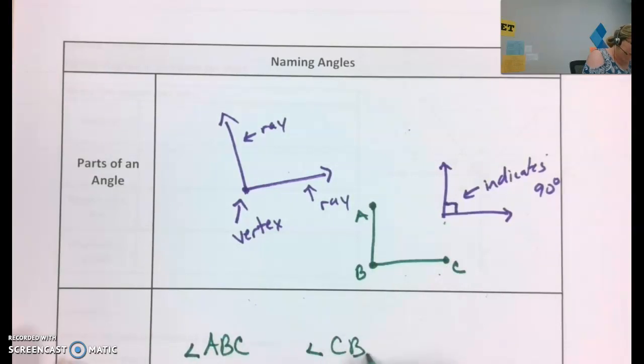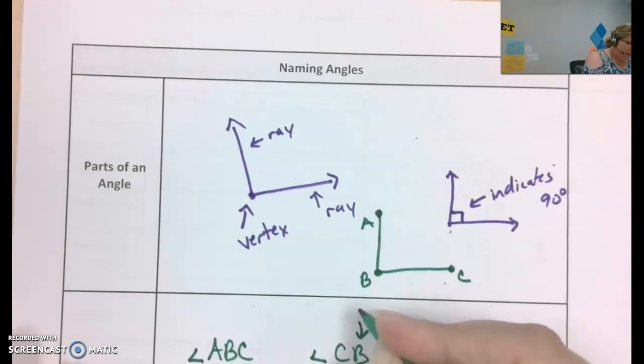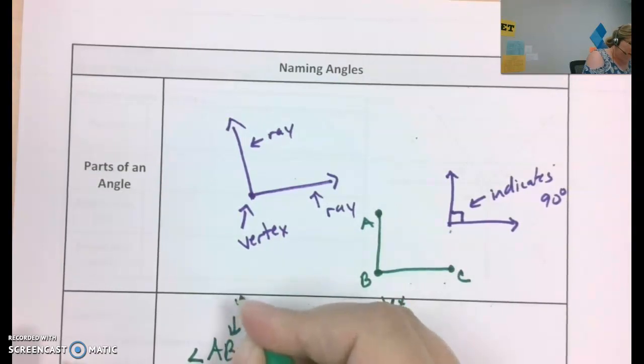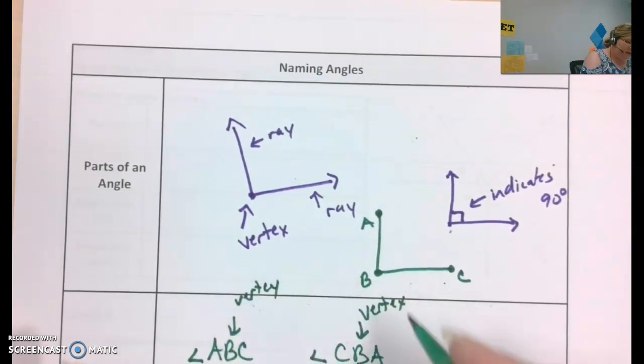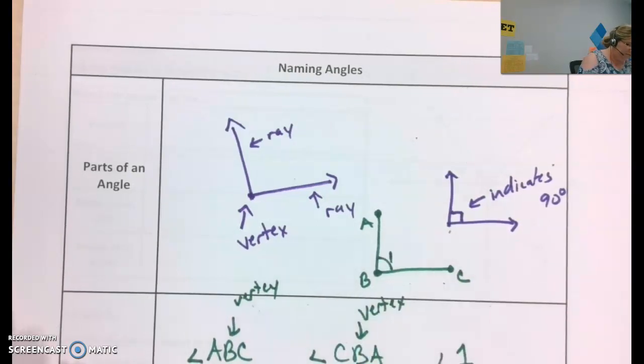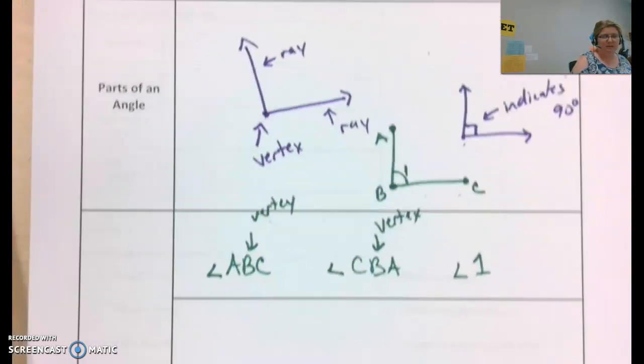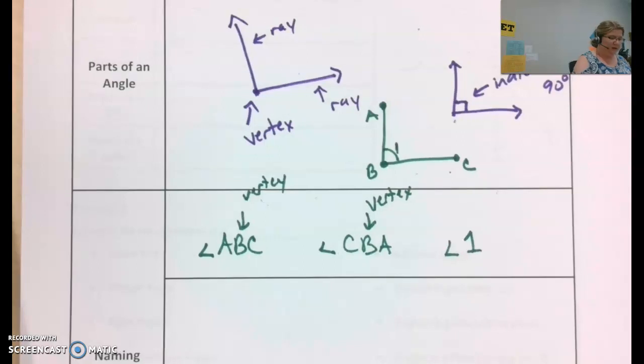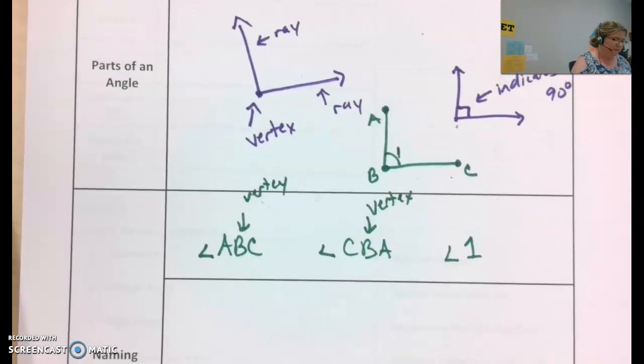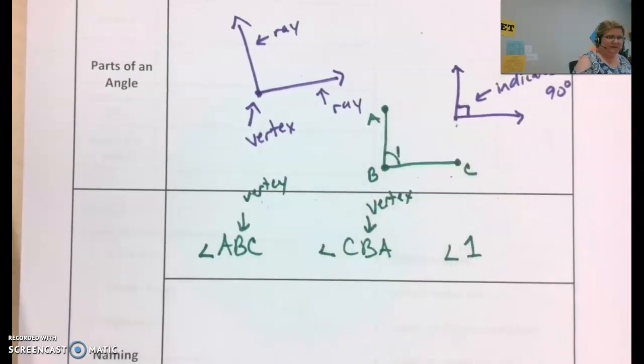I could also name it angle CBA. What's important is that the vertex has to be in the center. If I had a number here, I could also call it angle one. So, those are some different ways to name your angles. There's just more room here for more examples, but I feel that's sufficient.